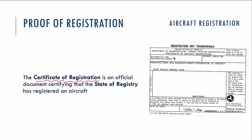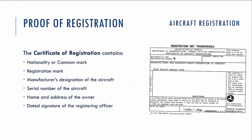The certificate of registration is an official document certifying that the state of registry has registered the aircraft. This certificate should contain the nationality or common mark. In brief, a common mark is the same as a nationality mark but issued for more than one country simultaneously — for example, a group of countries sharing use of one aircraft can be issued a common mark. The certificate must also include the registration mark, manufacturer, designation and serial number of the aircraft, the name and address of the owner, and the signature and date from the issuing officer.